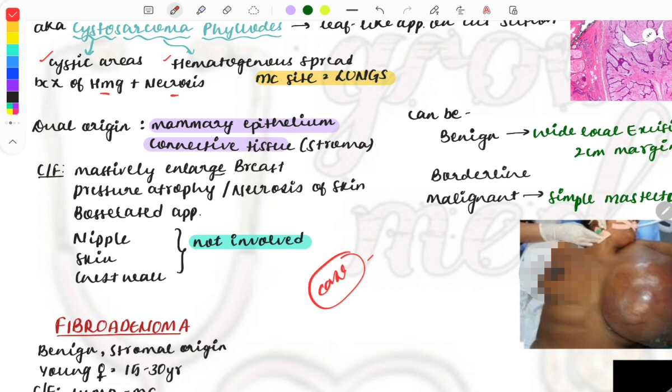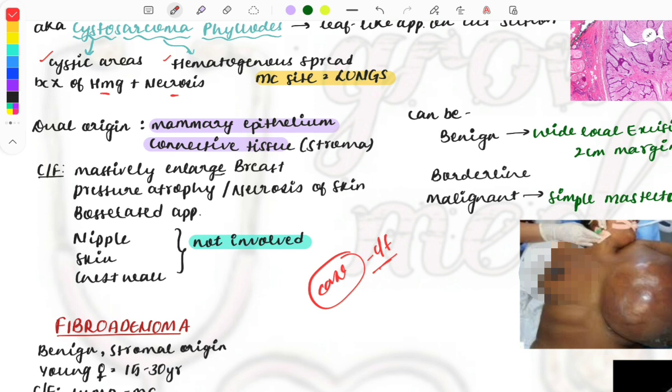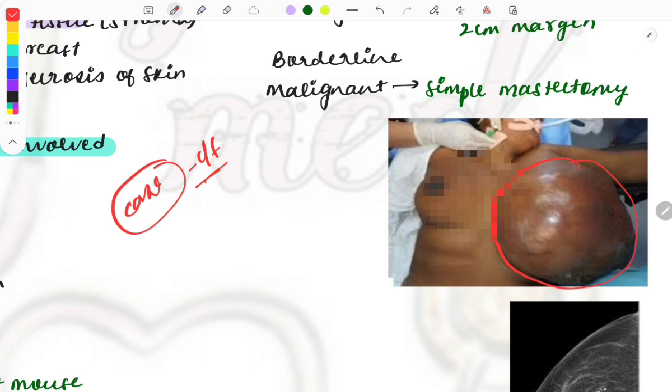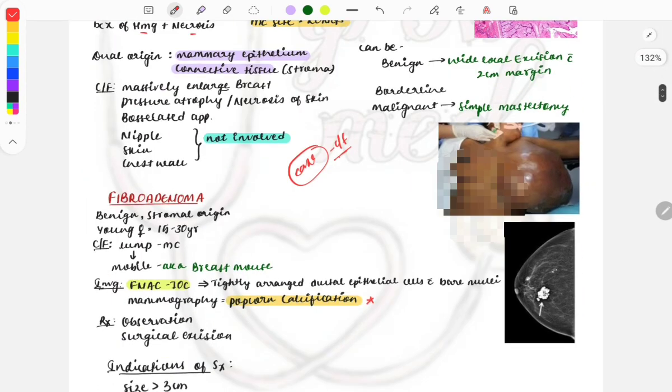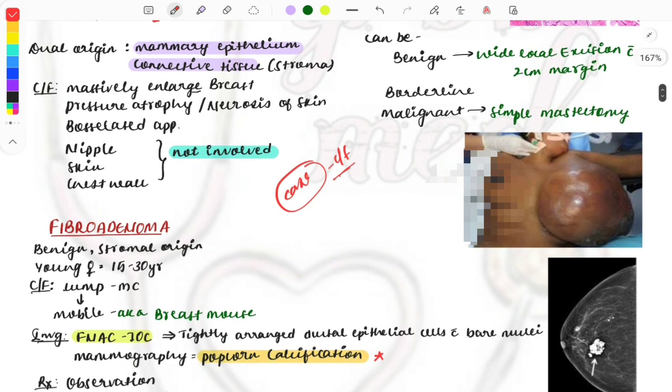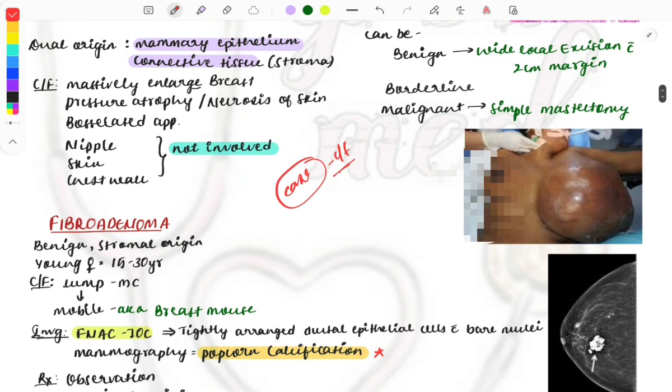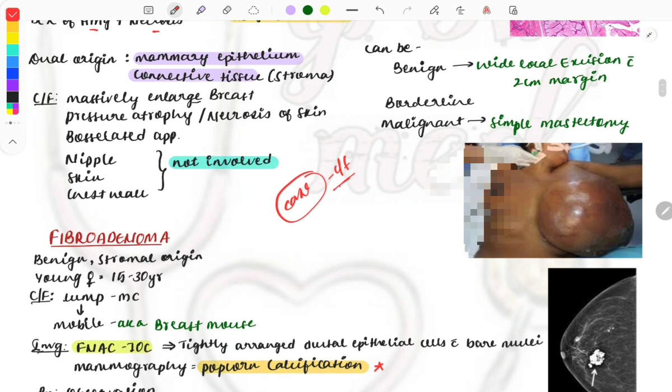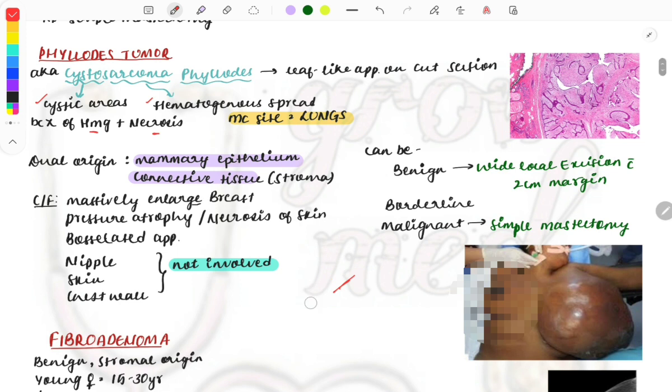Clinical features include massively enlarged breast, pressure atrophy or necrosis of the skin because of enlargement. You can see the breast has enlarged grossly and doesn't match the other breast—there's gross asymmetry. It gives a bossellated appearance. Importantly, nipple, skin, and chest wall are not involved in phylloides tumor.